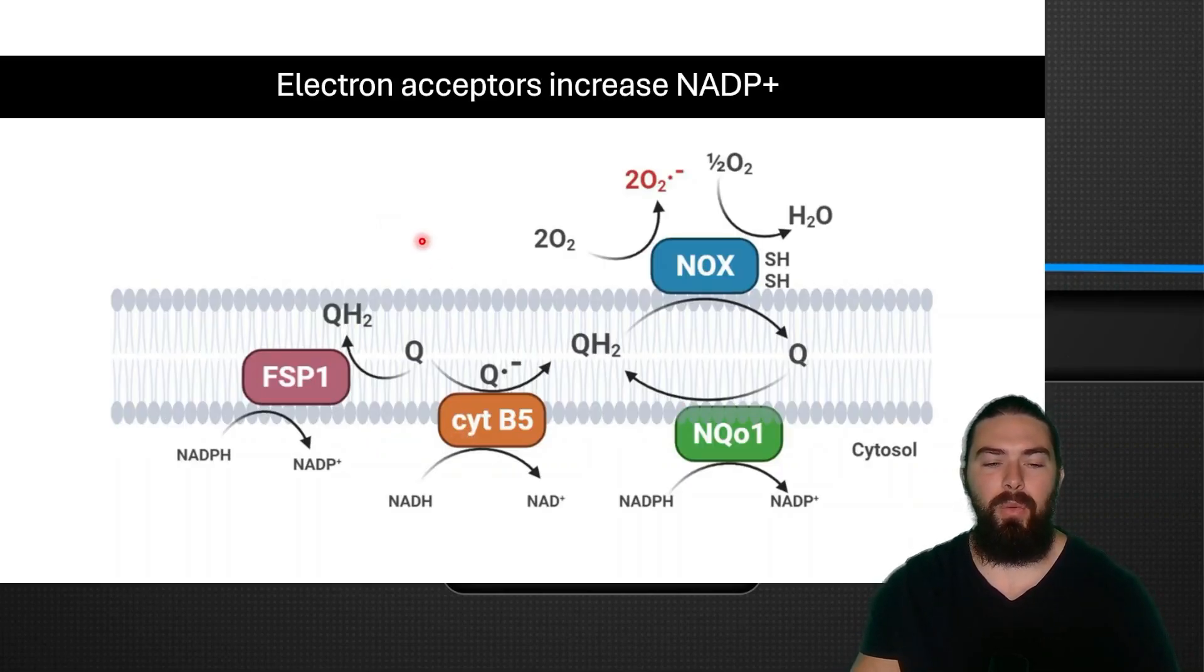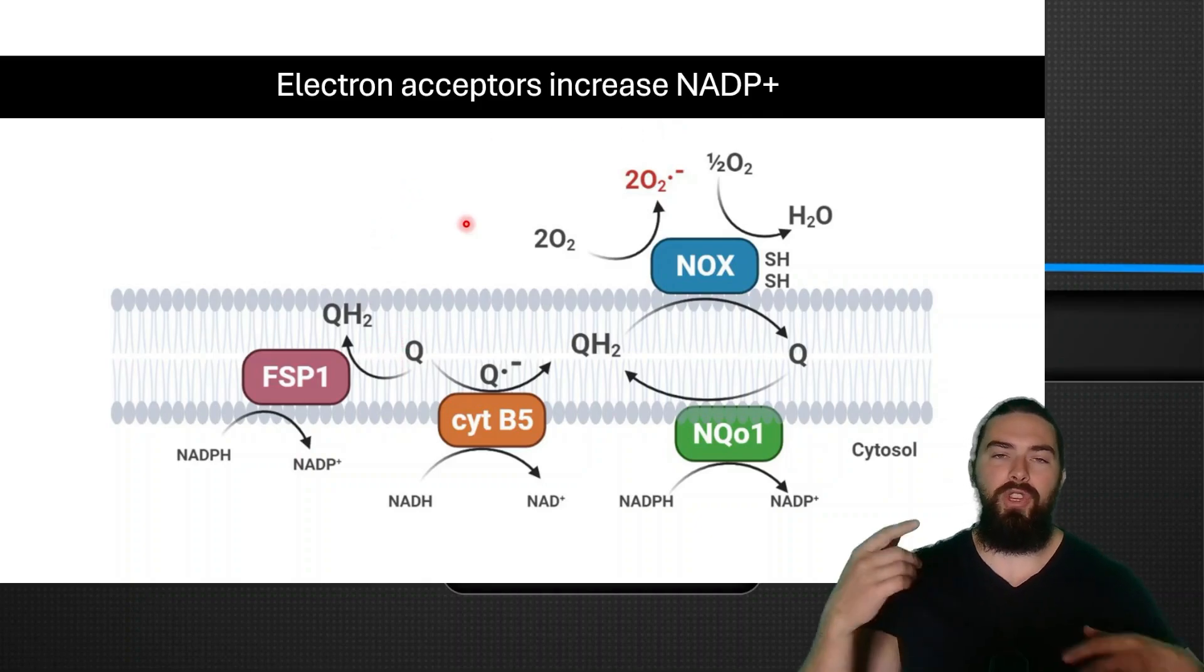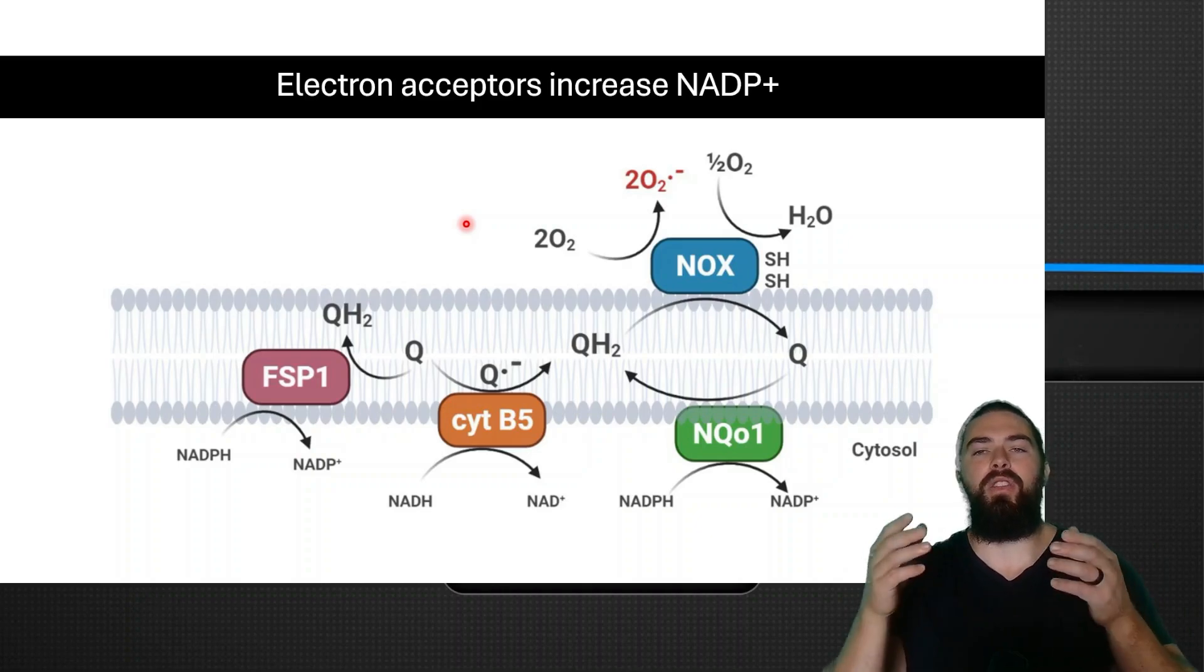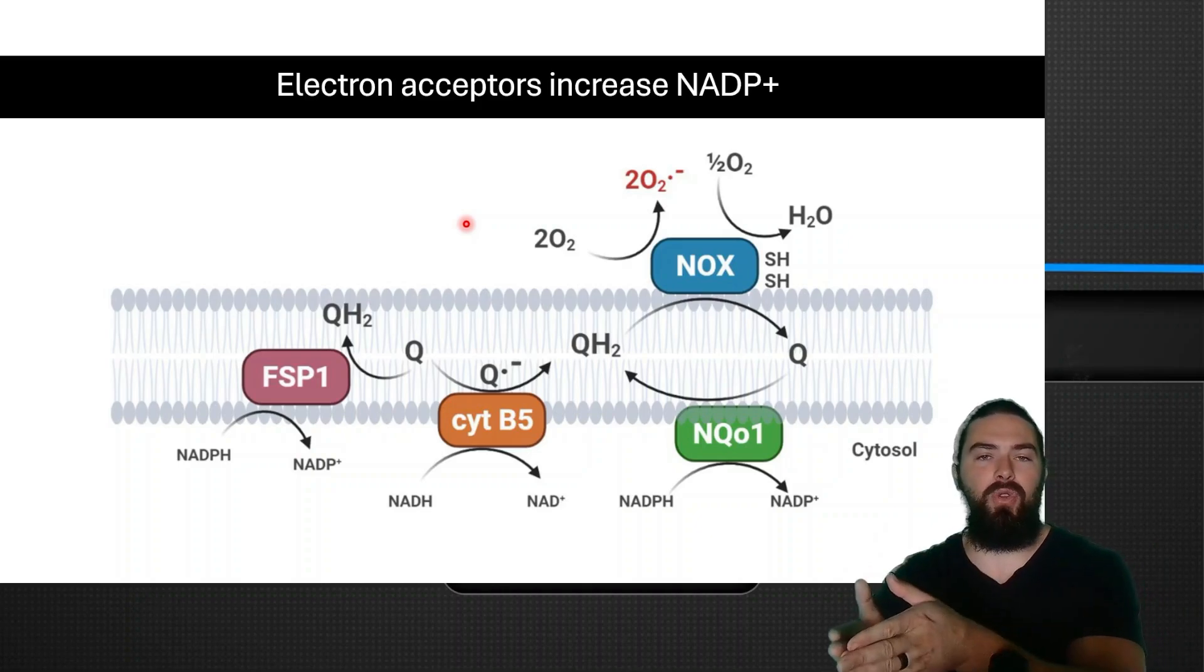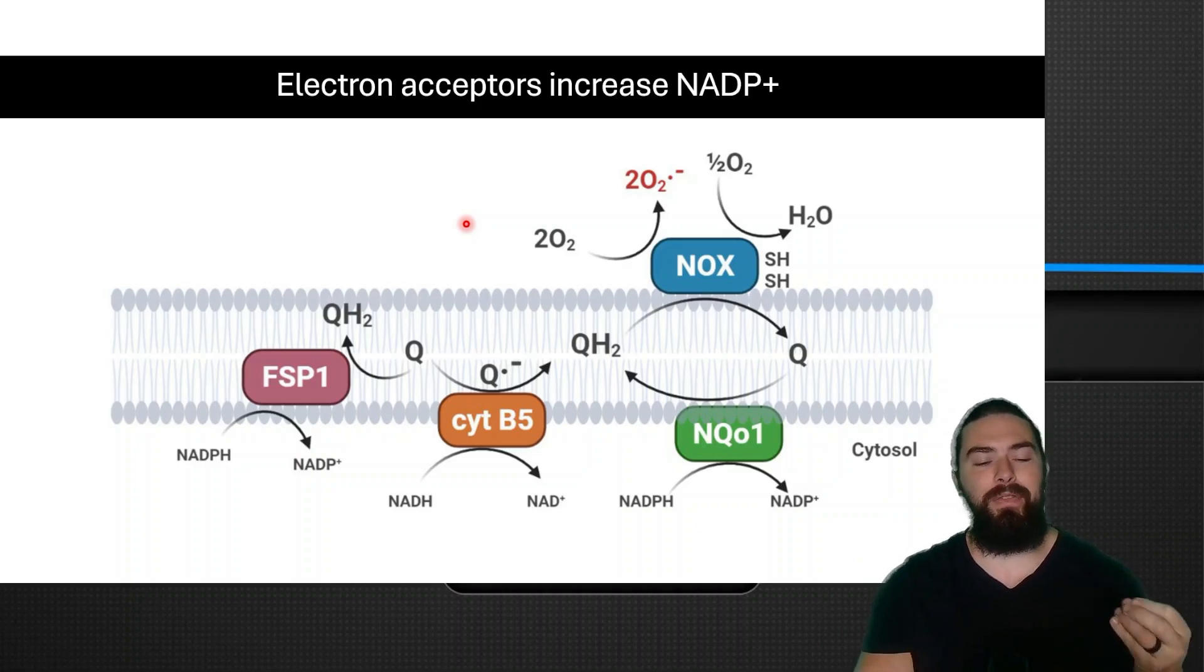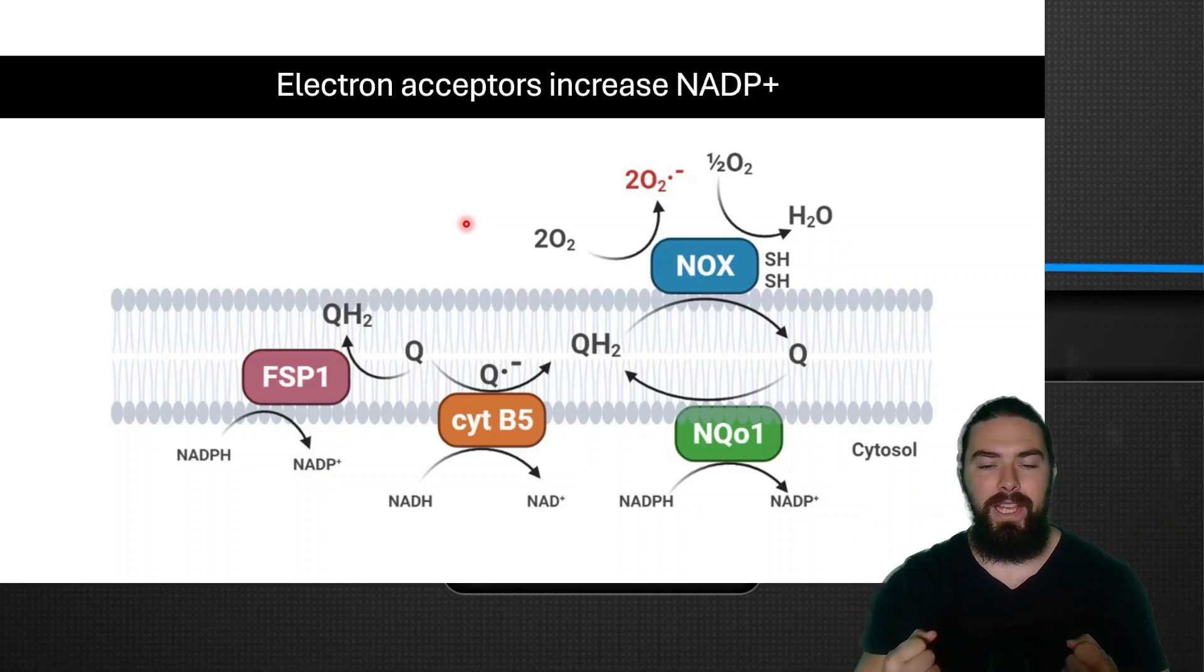Now let me explain exactly what an electron acceptor is. Electron acceptors increase NADP+. You might have heard about coenzyme Q10 and electron transfer chain. So when your body is producing energy, the food is donating hydrogens and electrons onto vitamin B2 and vitamin B3. B3 is converted into NAD. Vitamin B2 is converted into FAD. They are electron acceptors.